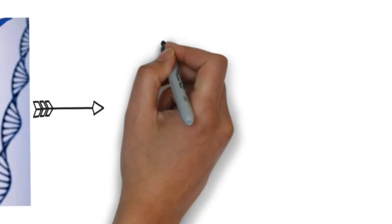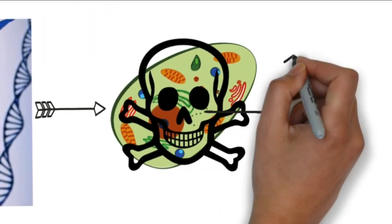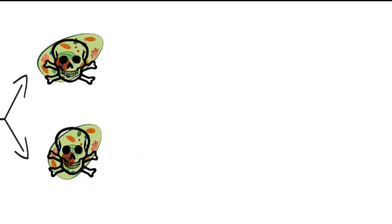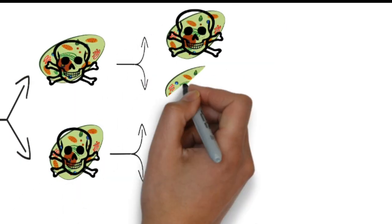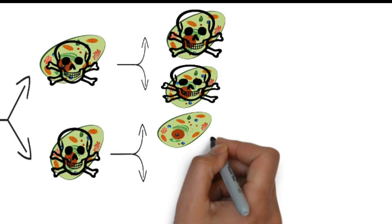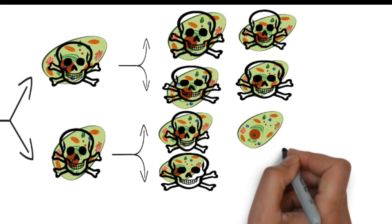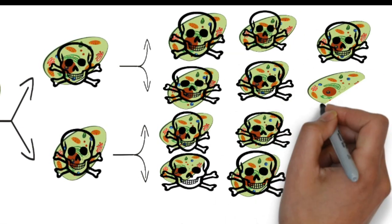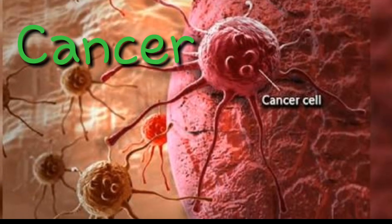Sometimes there is a mistake or defect in DNA, and so a defective cell is manufactured. Since all cells perform division, this defective cell increases the number of defective cells in the human body. The division of cells becomes out of control, and these defective or abnormal cells can't do their functions properly, and they form cancer.